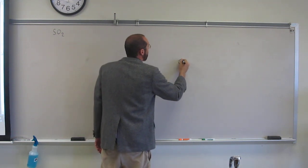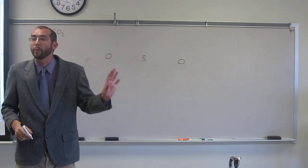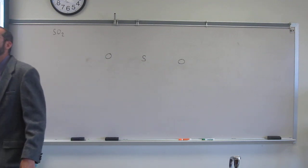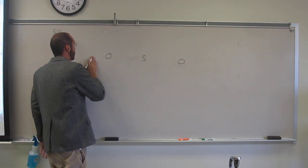So sulfur, oxygen, oxygen, just do the exact same thing as we did before. We're going to put the correct amount of electrons in relation to the Lewis structure, or the valence electron.